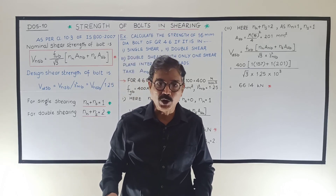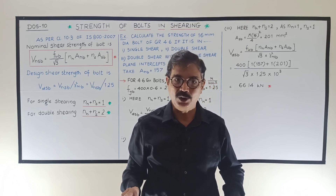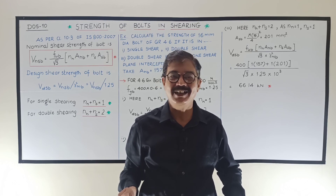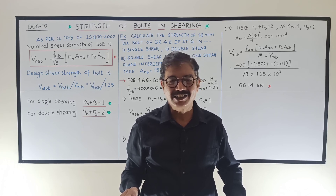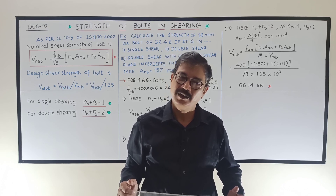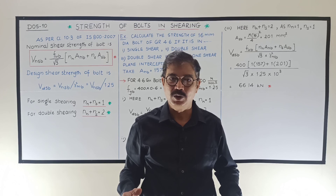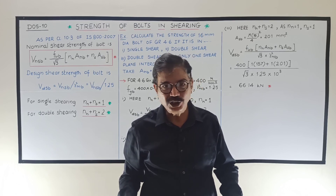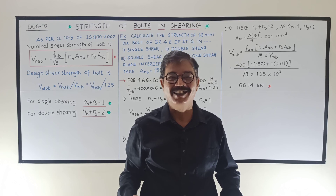In this manner you can find out the design shear strength of a bolt. You must know the type of connection to decide whether the bolt is in single or double shear. If nothing is clearly mentioned regarding the shear planes, take n_s = 0, meaning all planes intercept the threads. In the next video we will see how to find out the strength of a bolt in bearing. Thank you.